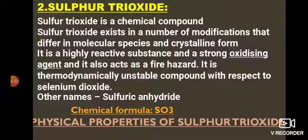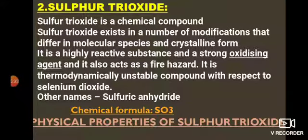Second oxide of sulphur: sulphur trioxide (SO3), also called sulphur 6 oxide (oxidation state +6). It exists in several different molecular and crystalline forms. It is highly reactive, a strong oxidising agent, acts as a fire hazard, and is thermodynamically unstable with respect to selenium dioxide. Its other name is sulphuric anhydride — removing water from sulphuric acid (H2SO4) gives sulphur trioxide. Physical state: liquid or gaseous; colorless to white crystalline solid that fumes in air, or may exist as a colorless liquid or gas. Vapour has a pungent odor; mist is odorless.